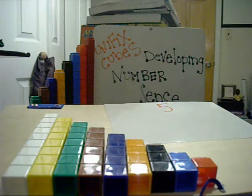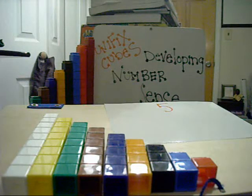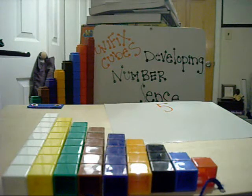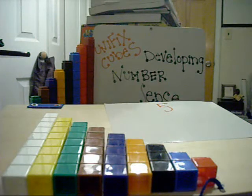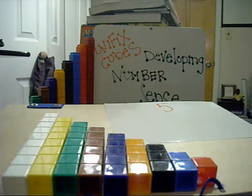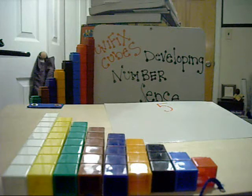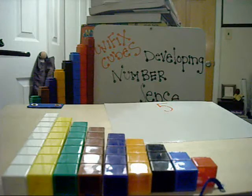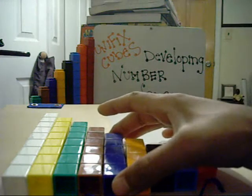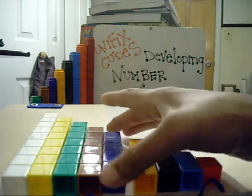So continuing with the idea of using Unifix cubes to develop number sense, I think another great activity that I like to do with kids that I tutor, for younger students as well as older students who still haven't developed some basic number sense, is developing the anchors of 5 and 10. What I like to have them do is represent numbers in more than one way.